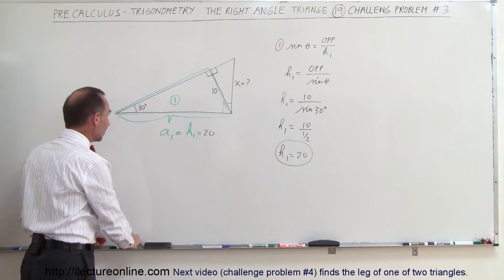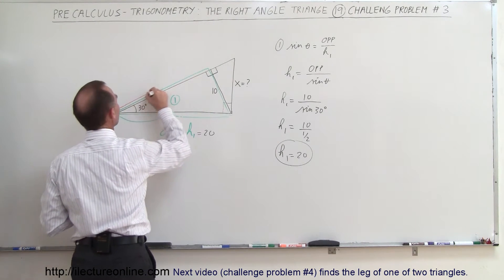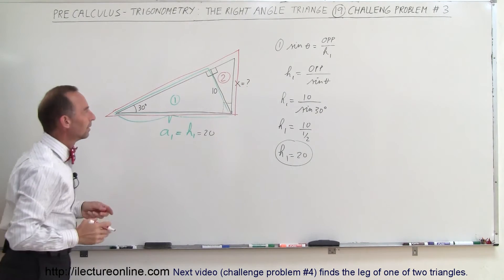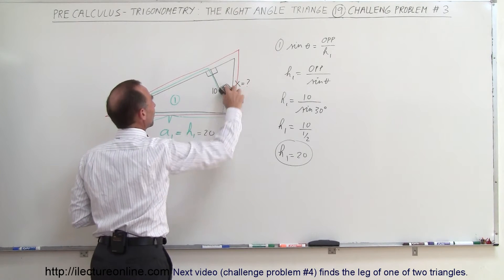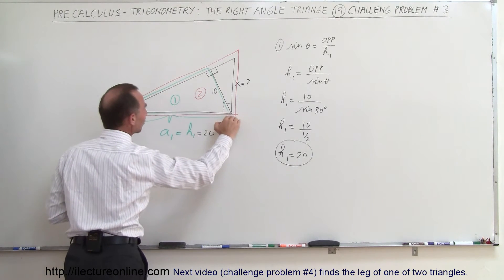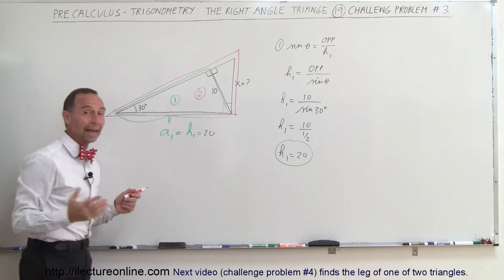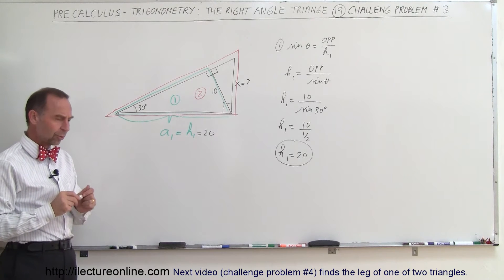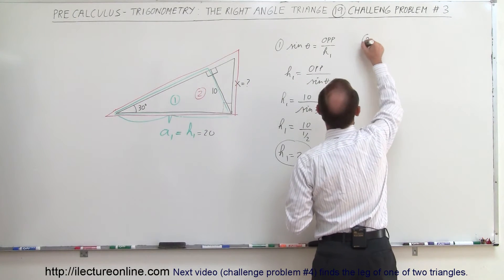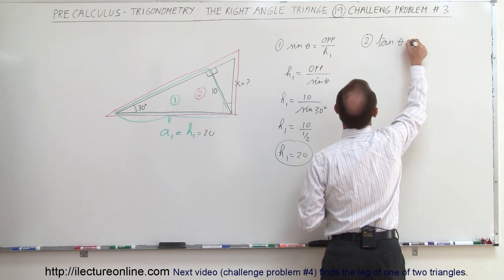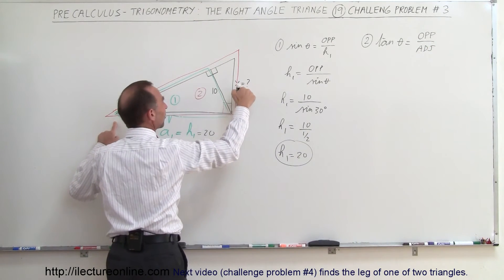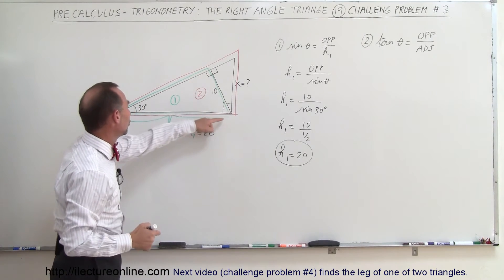Now let's take a look at the outside triangle using a different color — that's triangle number 2, the red triangle. Notice we now know this side right here, which is the adjacent side to the red triangle. We know this angle, and we're looking for the opposite side, x, of the red triangle.